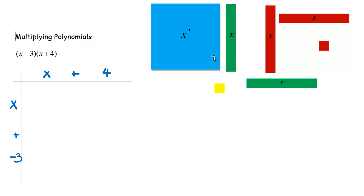Now we're going to multiply these, using what's called the area model — we're going to find the area of a rectangle that is x plus 4 long and x minus 3 wide.